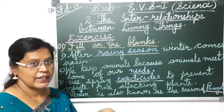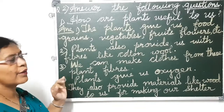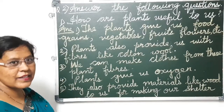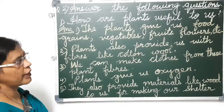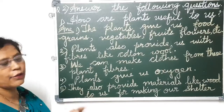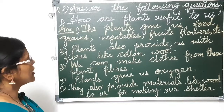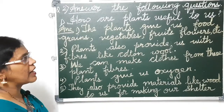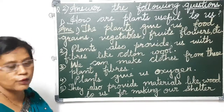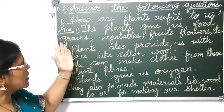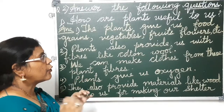Understood these fill in the blanks? Now we move towards our question and answers. We are going to understand and then you will be able to write down. The second question says: answer the following questions. The first question asks: how are plants useful to us? The plants give us food grains.